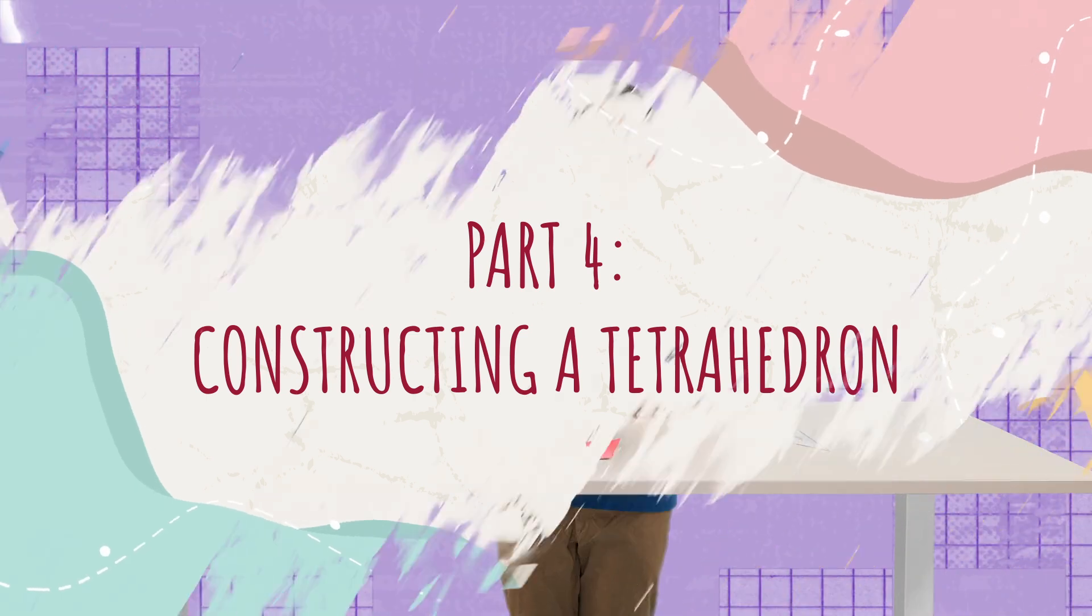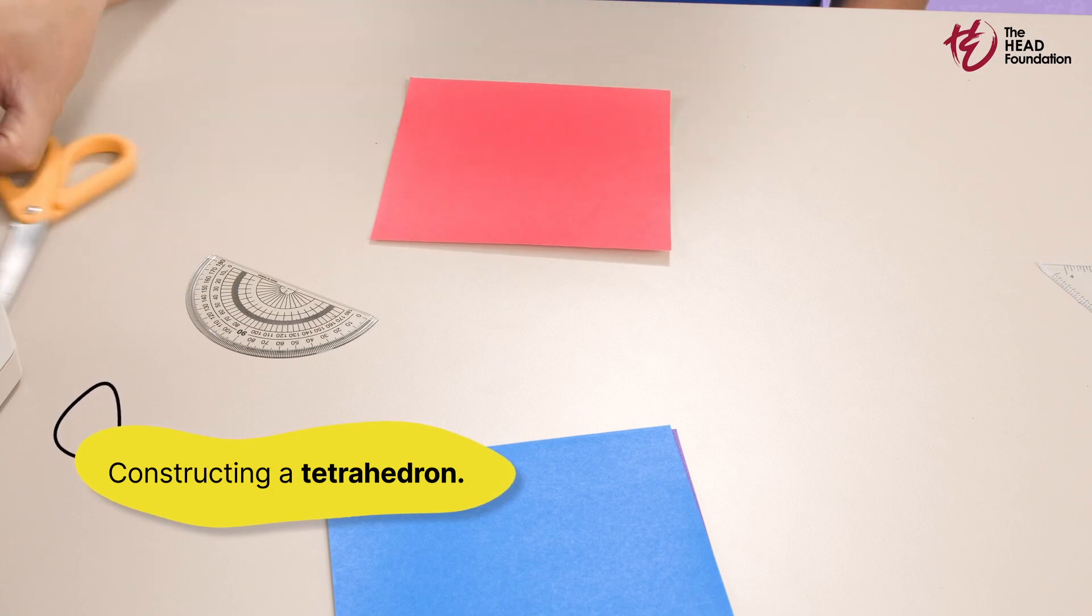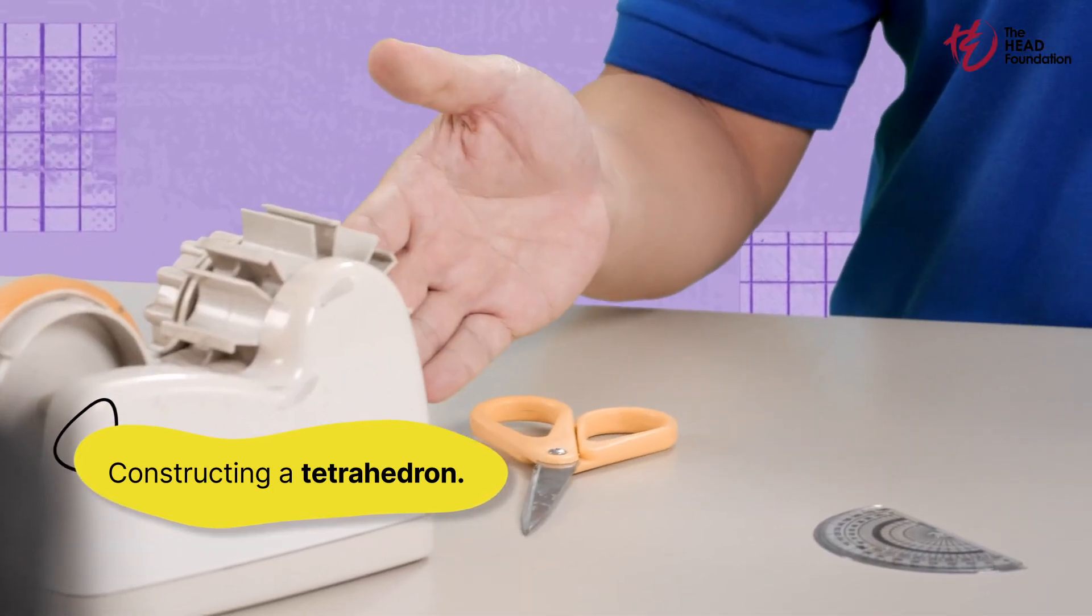Let us expand to the third dimension with this activity. A tetrahedron is one of the five platonic solids with four equilateral triangles for its faces. A four-sided die is in the shape of a tetrahedron. For this activity, we'll need more paper, a pair of scissors, and some adhesive tape.